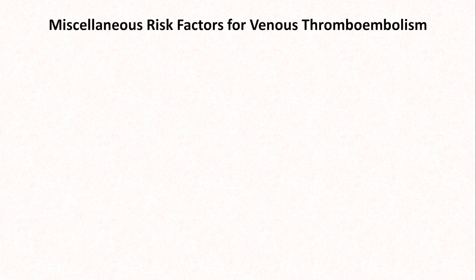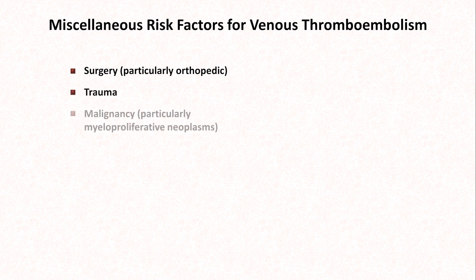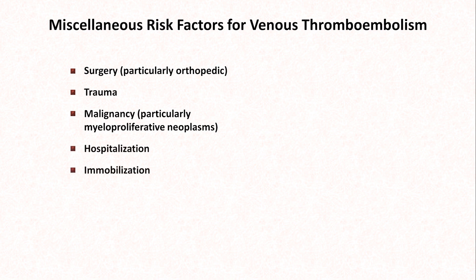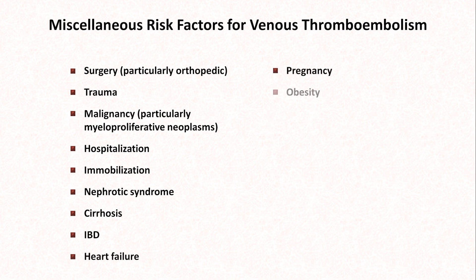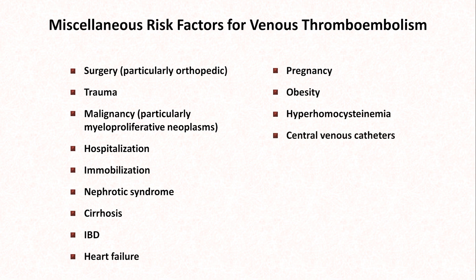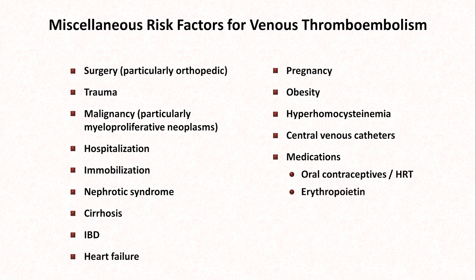In addition to the specific prothrombotic conditions discussed, there are many miscellaneous risk factors for venous thromboembolism — that is DVTs and PEs. These include surgery (particularly orthopedic), trauma, malignancy (particularly myeloproliferative neoplasms), hospitalization, immobilization including prolonged travel, nephrotic syndrome, cirrhosis, inflammatory bowel disease, heart failure, pregnancy, obesity, hyperhomocysteinemia, and central venous catheters. There are also a number of medications associated with an increased risk of thrombosis, most notably oral contraceptives and hormone replacement therapy, erythropoietin, and the breast cancer treatment tamoxifen.